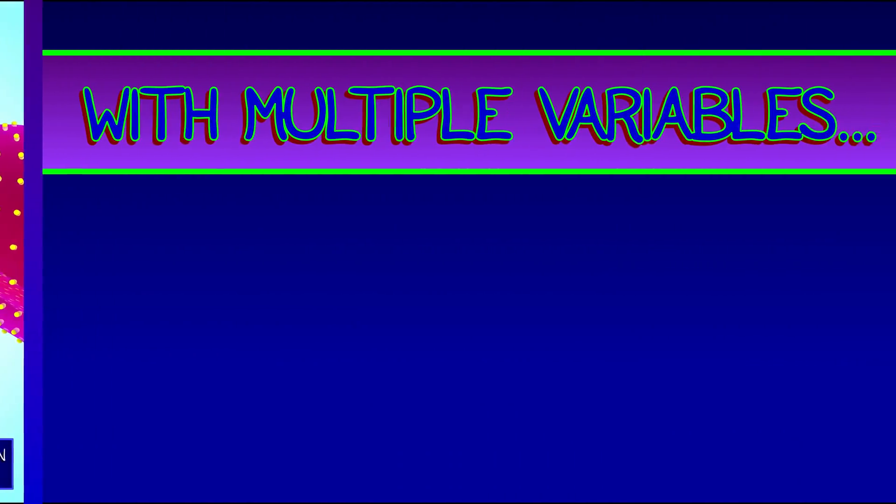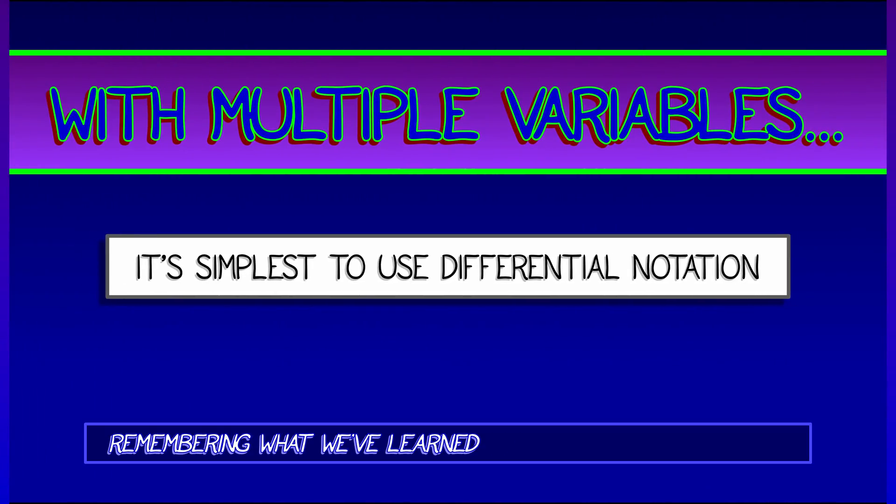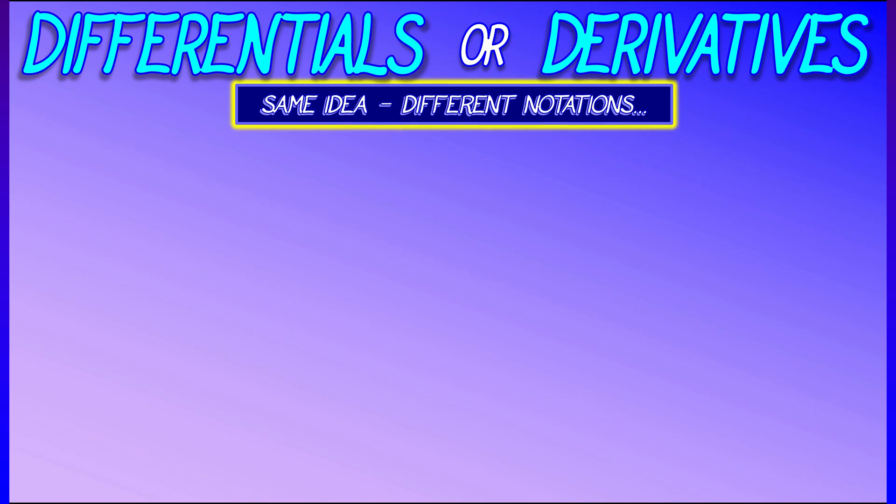So what happens in general when you have functions with lots of variables? Well, to do approximation and estimation, it's best to use differential notation. You might recall things we've done with implicit differentiation. Let's interpret that in terms of differentials and see how it relates to derivatives.